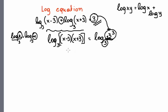So now I have a logarithm with base 3 equals to a logarithm with base 3. Since they are equal, this means that the arguments are going to be equal as well. So what I have is x minus 3 times x plus 3 and this is equal to 3 to the third.